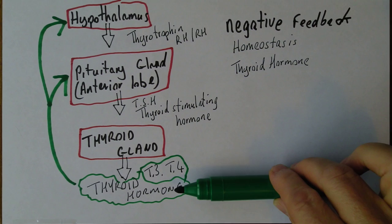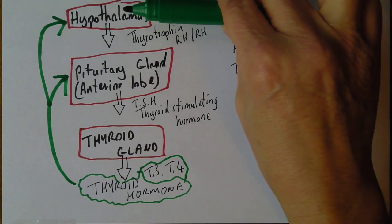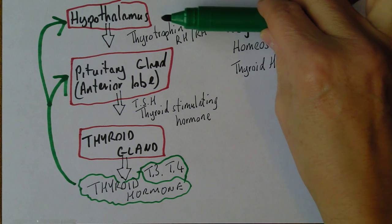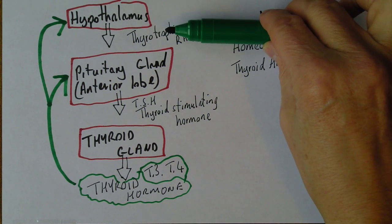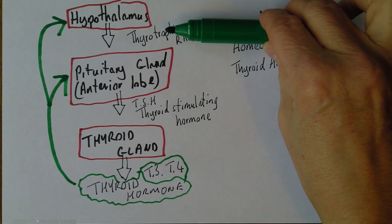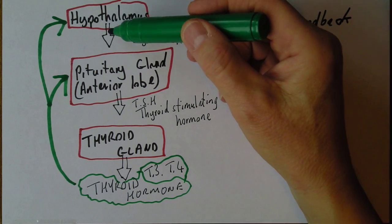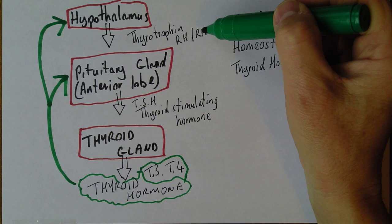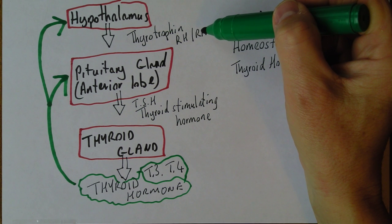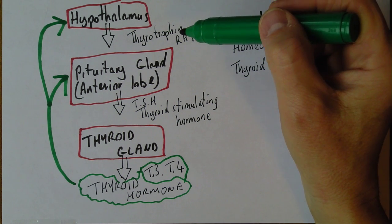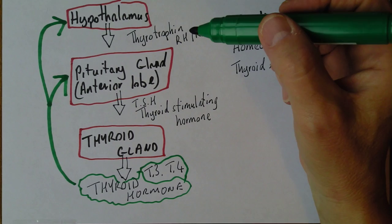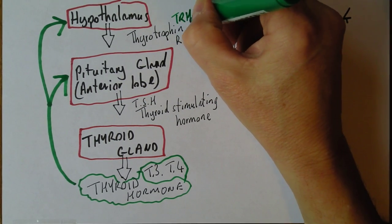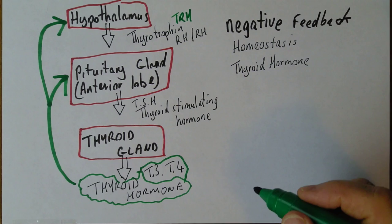The increased levels of thyroid hormone will inhibit the release of thyrotrophin releasing factor from the hypothalamus. So now we will have less thyrotrophin releasing hormone — less TRH.